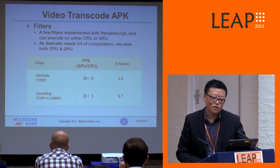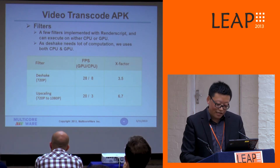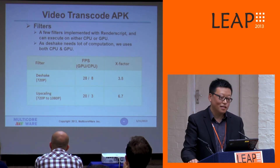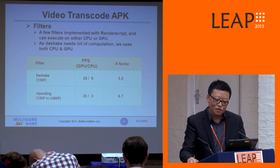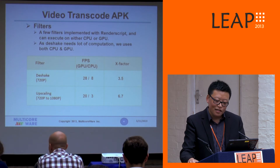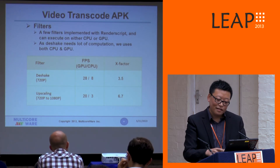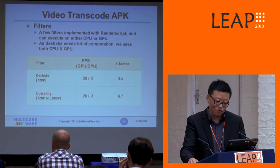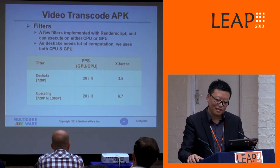Here are some performance numbers we have seen. I listed two filters. One is called De-shake, which does motion stabilization for input video. We are seeing we can almost do De-shake in real time, with about 3.5x speedup compared to the CPU. We can also do real-time processing for 720p for the De-shake. For upscaling, we are seeing an even bigger factor — almost 6.7x.